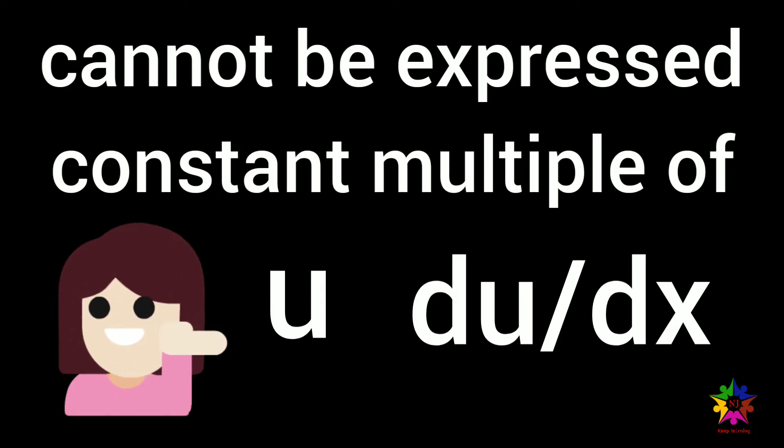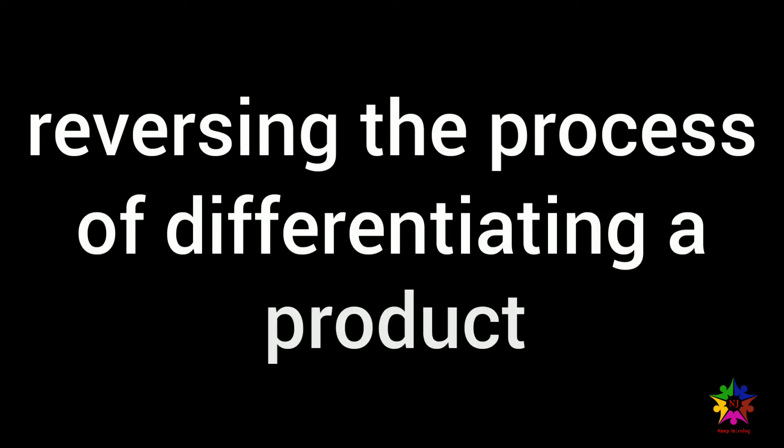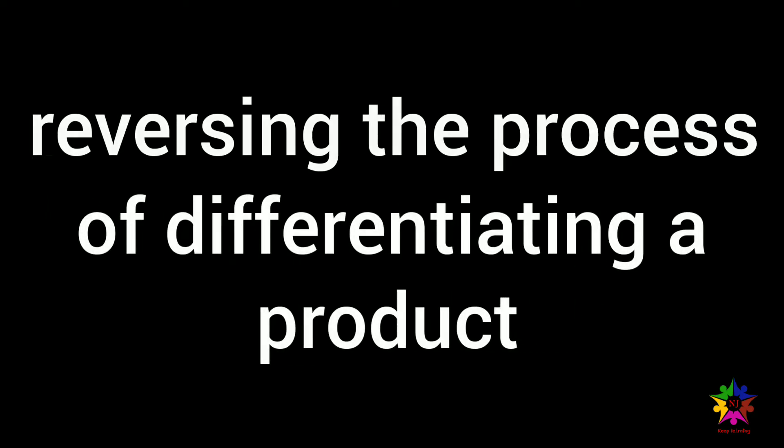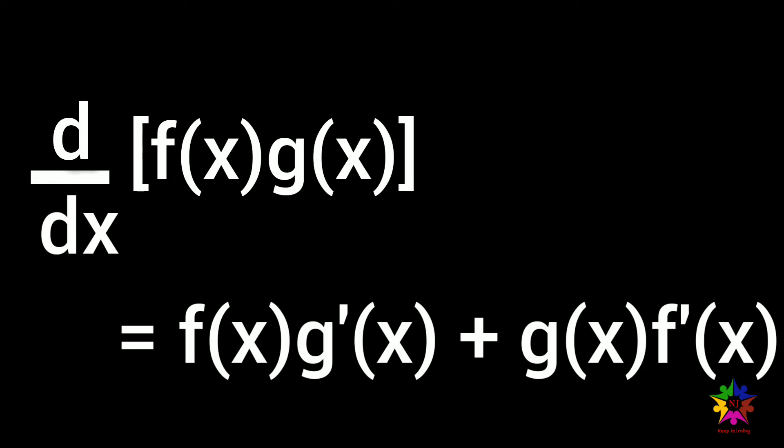The method is derived by reversing the process of differentiating a product. Suppose there are two functions f of x and g of x. From the product rule, d by dx of f of x g of x is equal to f of x g dash of x plus g of x f dash of x.